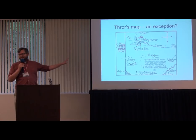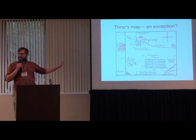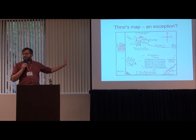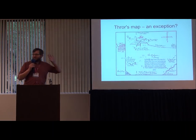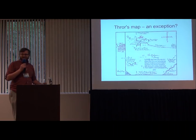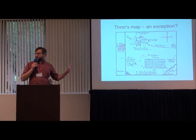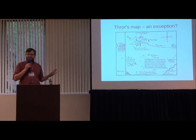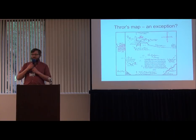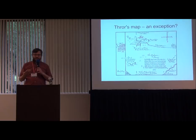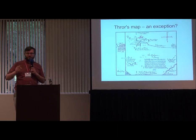Thror's map in The Hobbit is kind of the exception to this rule. With this map, we know who drew it, we know about the cultural context of its creation, and it even appears in the story — the characters hold it in their hands. But it's the exception that proves the rule. We don't have that kind of understanding of things like the big map of Northwestern Middle-earth.